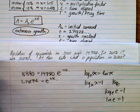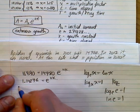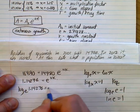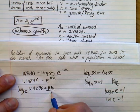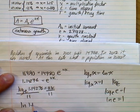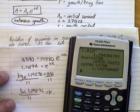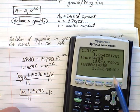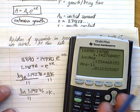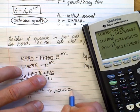So, we can log both sides, we can ln both sides, or we can convert it into log form. Log base E of 1.14276 is equal to 11K. So, now, if you divide both sides by 11, this is log base E, so it's ln 1.14276, divide it by 11, and you get your K value. So, let's ln this whole number, divide it by 11, and you get a K of 0.01213. Let's use that as my K value.